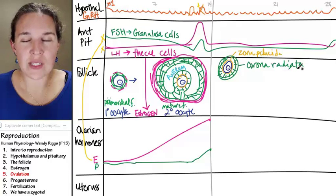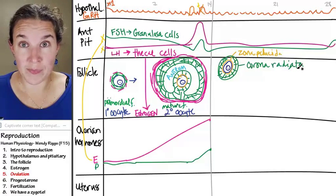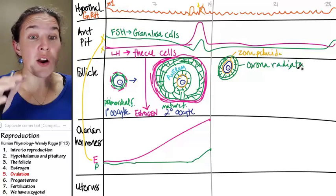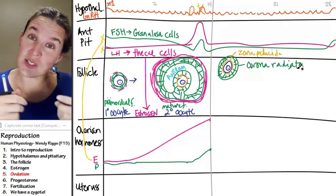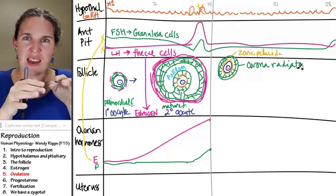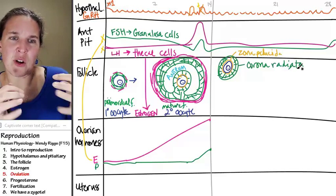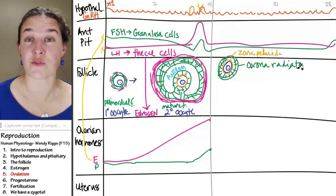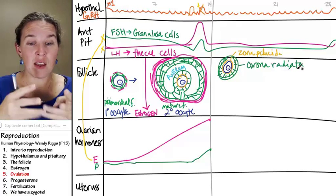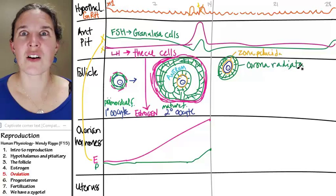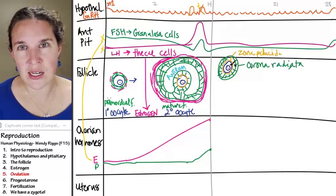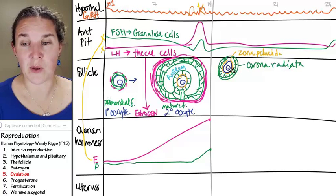Now, it explodes out of the ovary into the peritoneal cavity where fallopian tubes, the uterine tubes, have little fimbria and little cilia on their fimbria, and they're literally creating waves in the fluid in the peritoneal cavity, and those waves create currents that pull the secondary oocyte with all of its stuff that's coming with it.